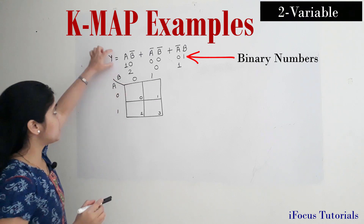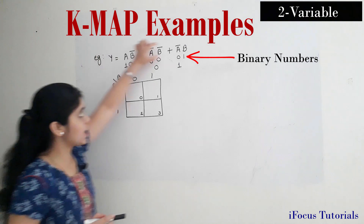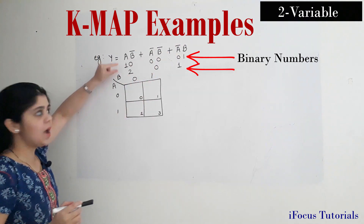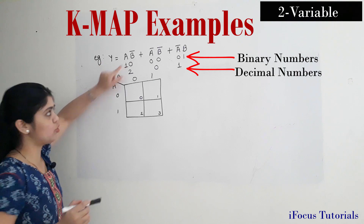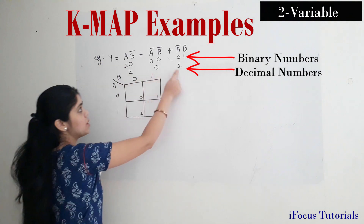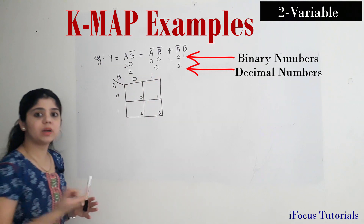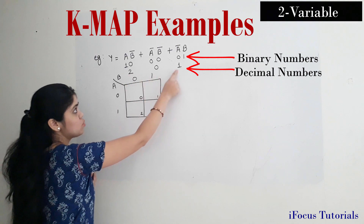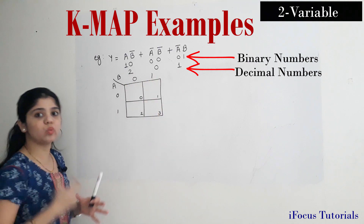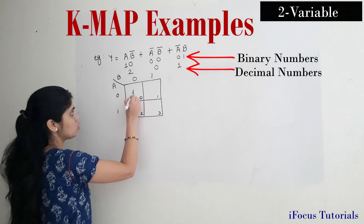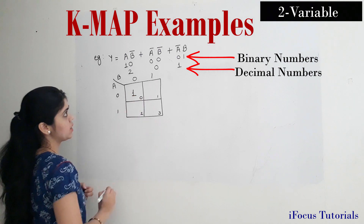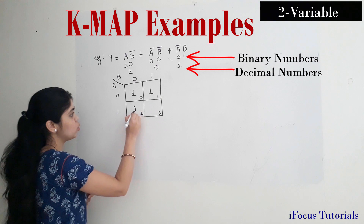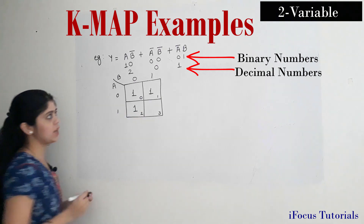I have represented this expression first in its binary form and then in its decimal form. These decimal numbers are nothing but the box numbers. So I will represent these box numbers with a 1. Box 0 is given as 1, box 1 is given as 1, and box 2 is given as 1.